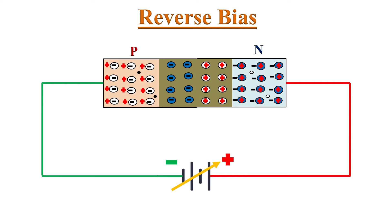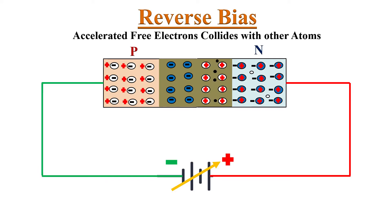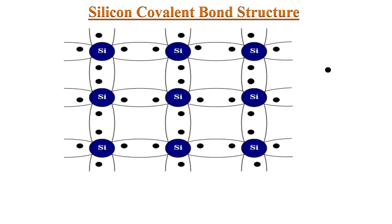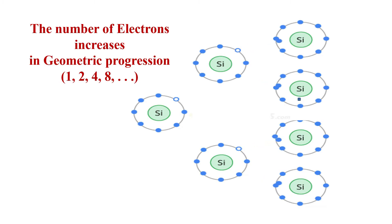When the applied reverse voltage reaches the breakdown voltage, these minority carriers moving at very high speed collide with other atoms and can knock off valence electrons, producing more free electrons. We can see this at the crystal structure level: a highly accelerated free electron may collide with another atom and knock out a bound valence electron. So one free electron dislodges one valence electron, resulting in two free electrons. These two free electrons then dislodge two more, resulting in four free electrons. In this way the number of free electrons increases in geometric progression.